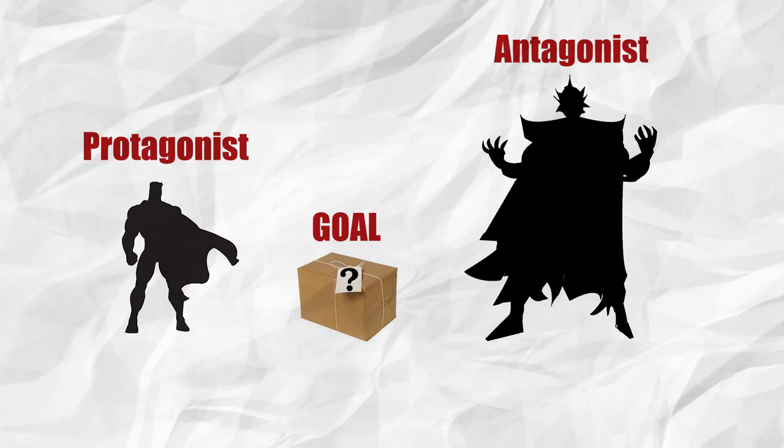When you're describing your protagonist in your logline, leave out the character name — it's completely meaningless unless it's somebody that we all know, like Christopher Columbus or Martin Luther King or Abraham Lincoln. If it's just John Doe, we have no idea who that is until we actually read your screenplay.